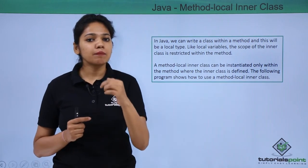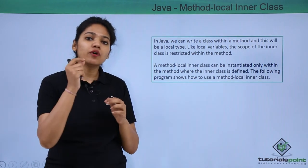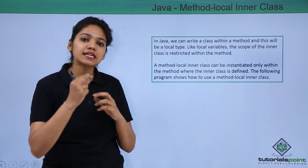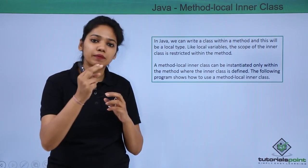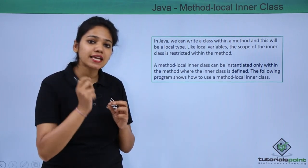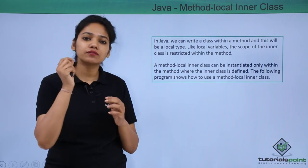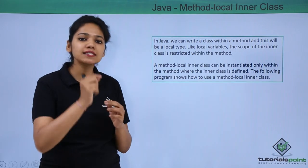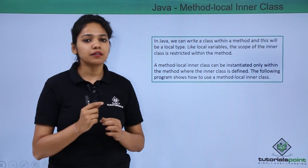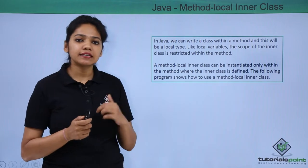Taking the example of a print method, if you have created an inner class inside this print method, you need to instantiate the object of this inner class within that same method. Let us understand this in detail with the help of an example.